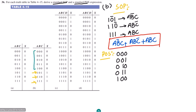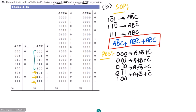In order to find the product of sum, we make the summation of each term equal to 0 by complementing the variables that are 1. So we get: (a+b+c), then (a+b+c'), then (a+b'+c), then (a+b'+c'), and (a'+b+c).